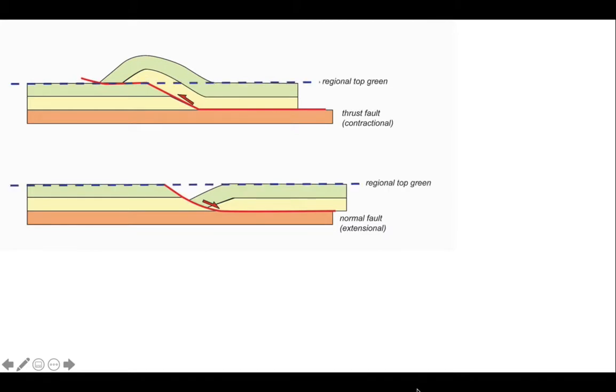Let's draw in the regional for the top of the green horizon. So the act of thrusting is to move rocks above their regional, and the act of normal faulting is to do the opposite and drop rocks below their regional. Thrust belts make hills. Normal faults make basins.